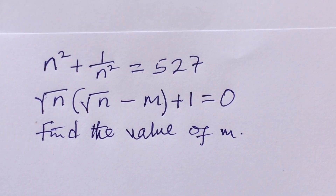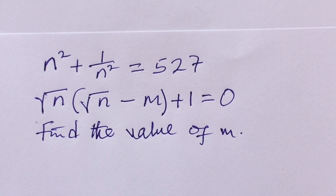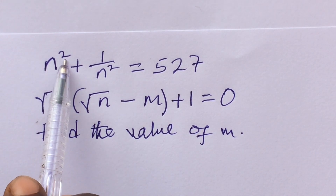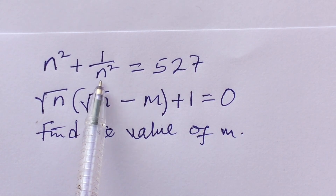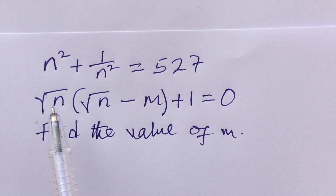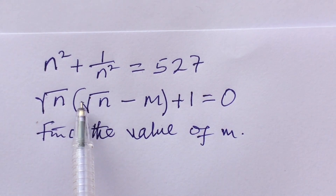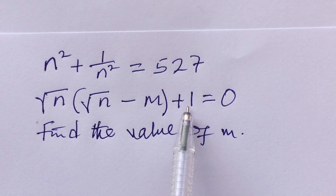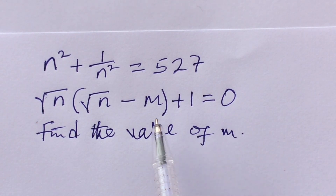Welcome to my channel, this is Online Math TV where we learn mathematics all the time. Before us here we have a math olympiad question. The question reads: n² + 1 all over n² equals 527, and √n(√n − m) + 1 = 0.